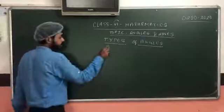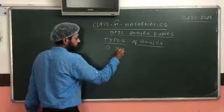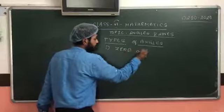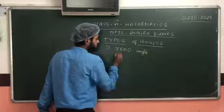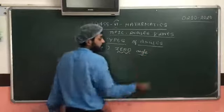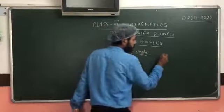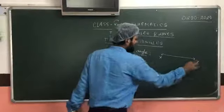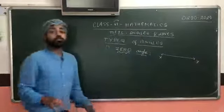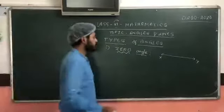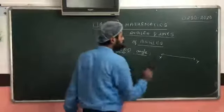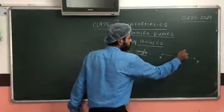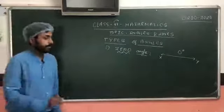The first type is the zero angle. What is a zero angle? We take a straight line X and Y. Since this has no opening or spread over it, it will be called a zero angle. It has a measure of zero degrees only.